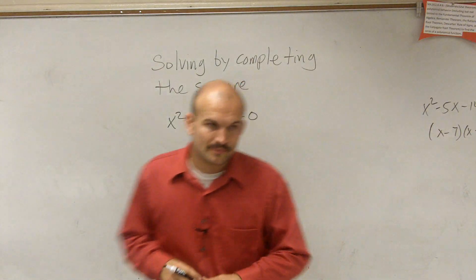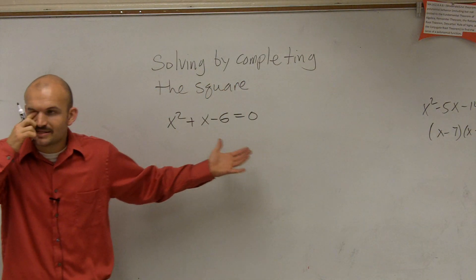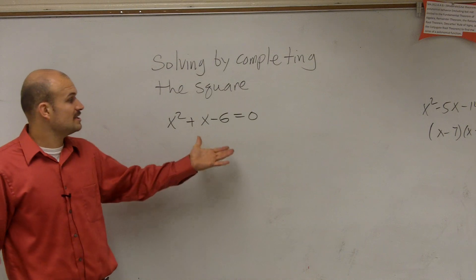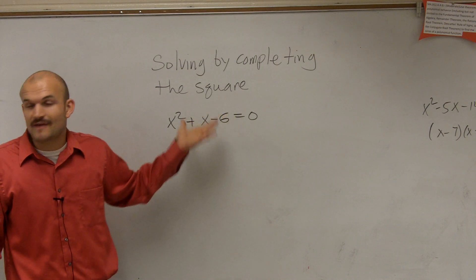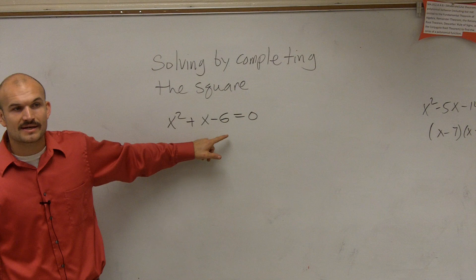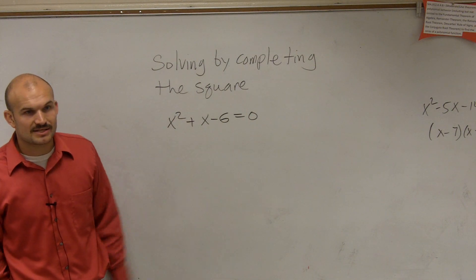we need to remember when completing the square is always we have to set equal to zero. So therefore, the first thing I would look into is can we factor this? What two numbers multiply to give you negative six but then add to give you positive one?